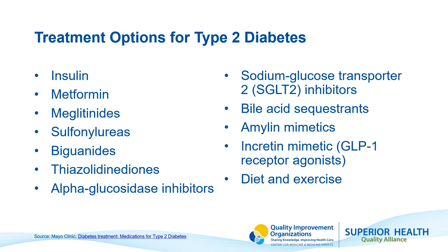We won't go through every treatment in detail, but let's cover the basics of anti-diabetic treatments. We have various options including metformin, insulin, sulfonylureas, SGLT2 inhibitors, GLP-1 receptor agonists, along with diet and exercise. These treatments are tailored to the patient's management plan and the type of diabetes they have.